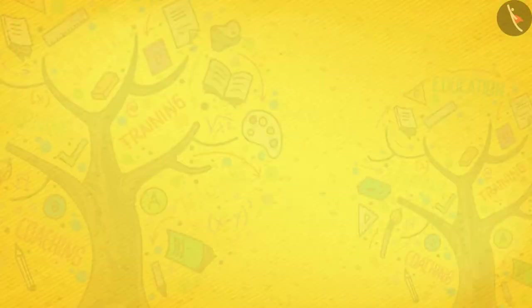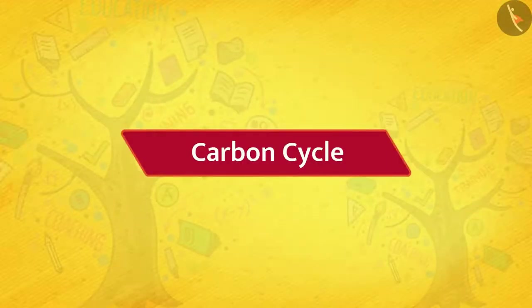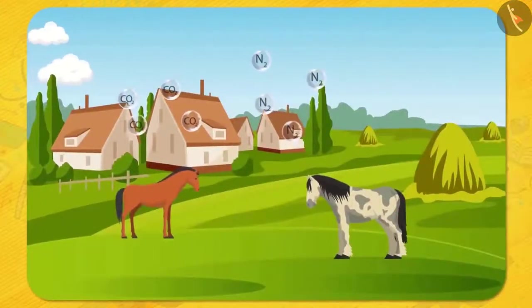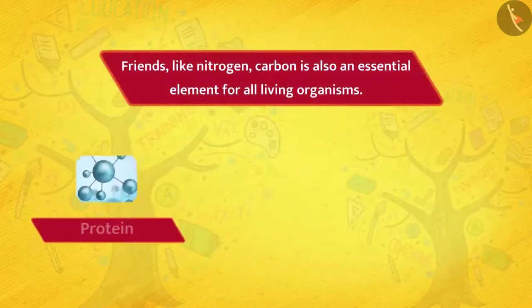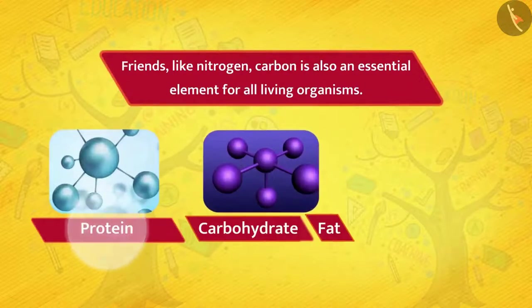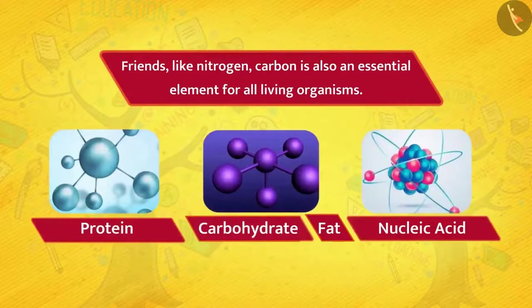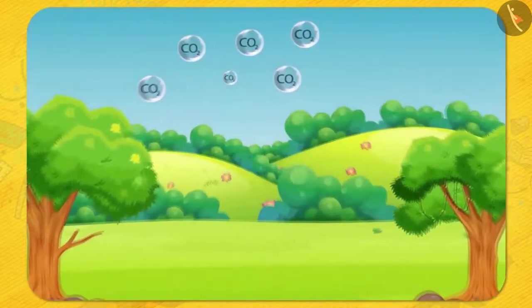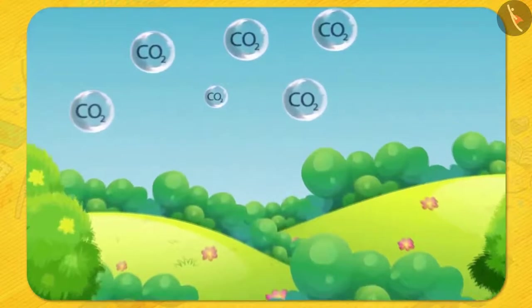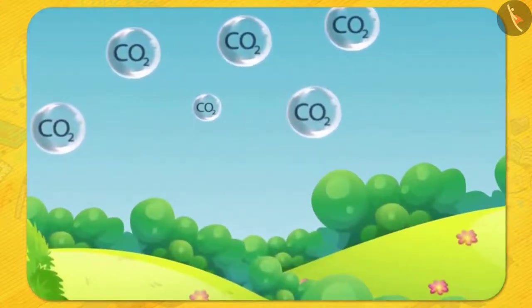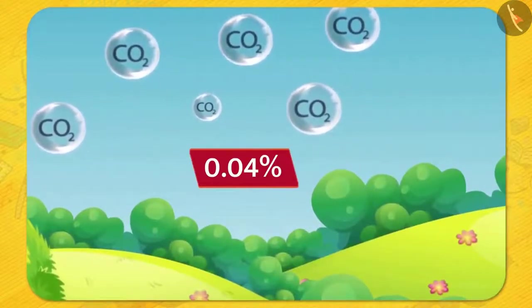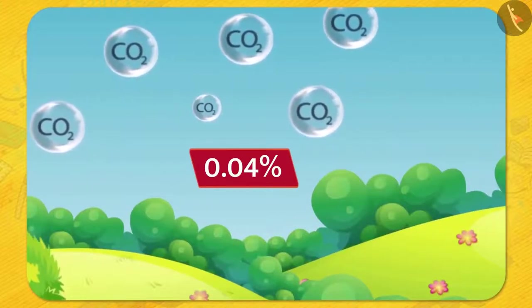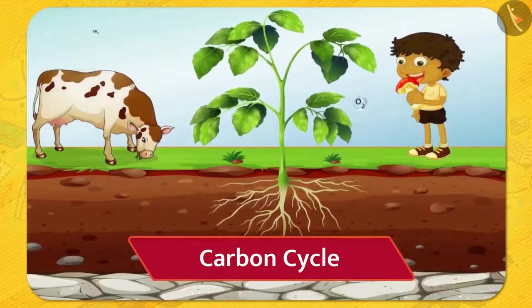Carbon cycle. Friends, like nitrogen, carbon is also an essential element for all living organisms. It is an important part of compounds like protein, carbohydrate, fat, and nucleic acid. Do you know in what form carbon is found in the atmosphere? Carbon dioxide. Absolutely correct. About 0.04 percent of the atmosphere is carbon dioxide, and its percentage almost remains constant. Let's know how from this carbon cycle.